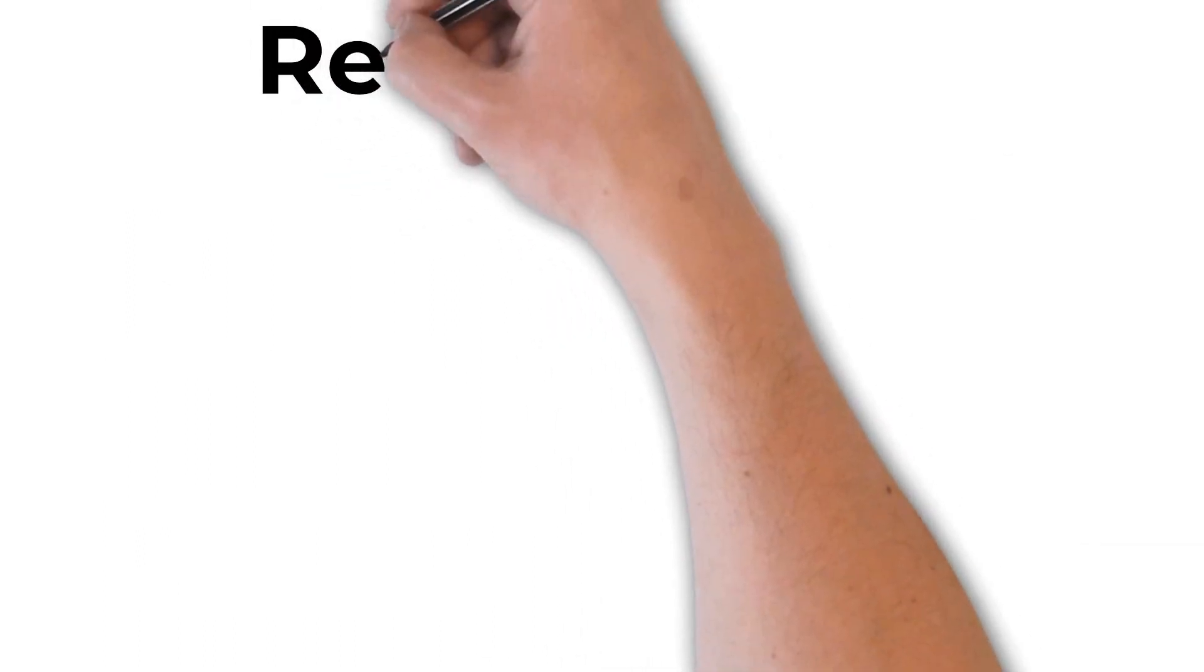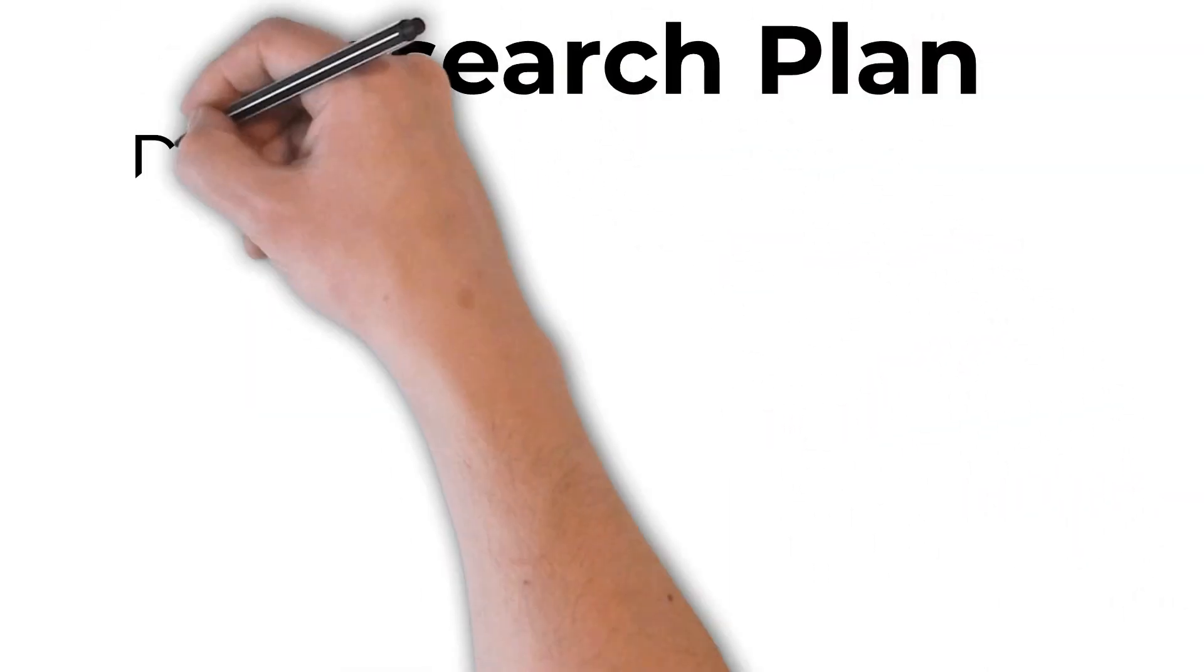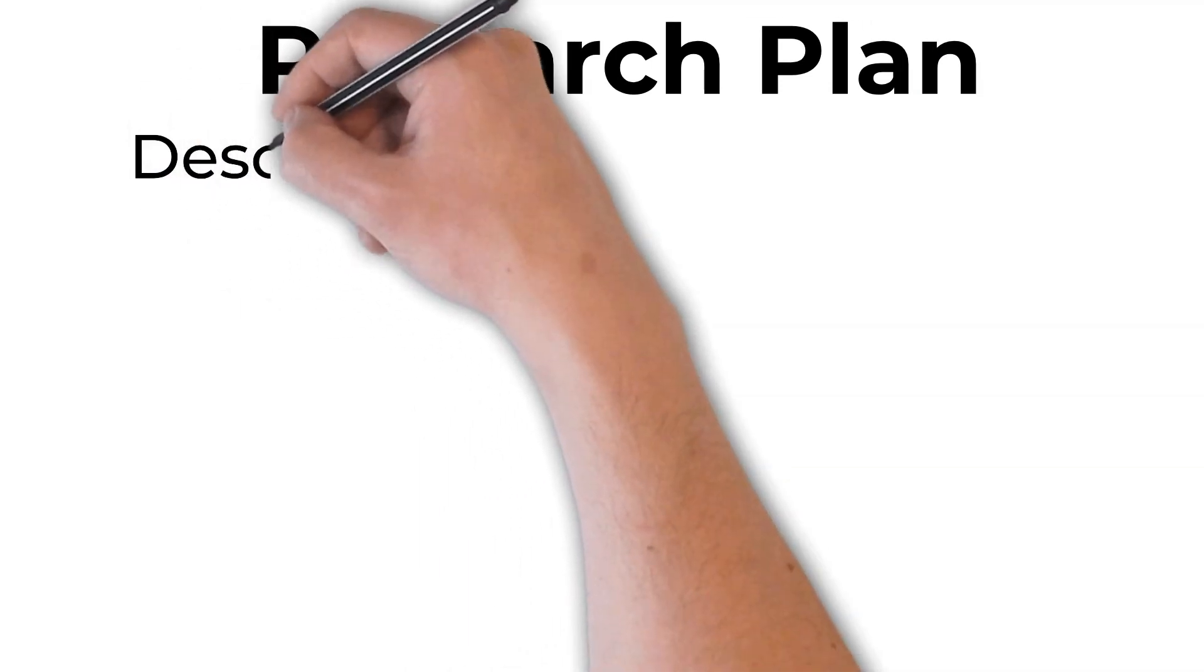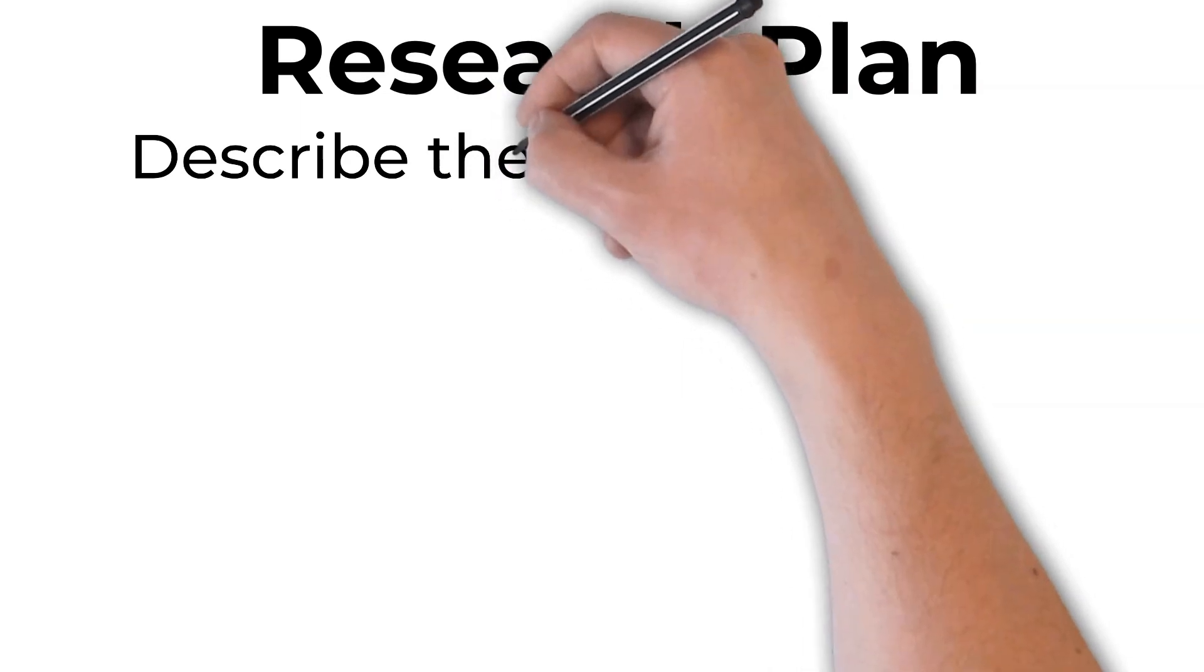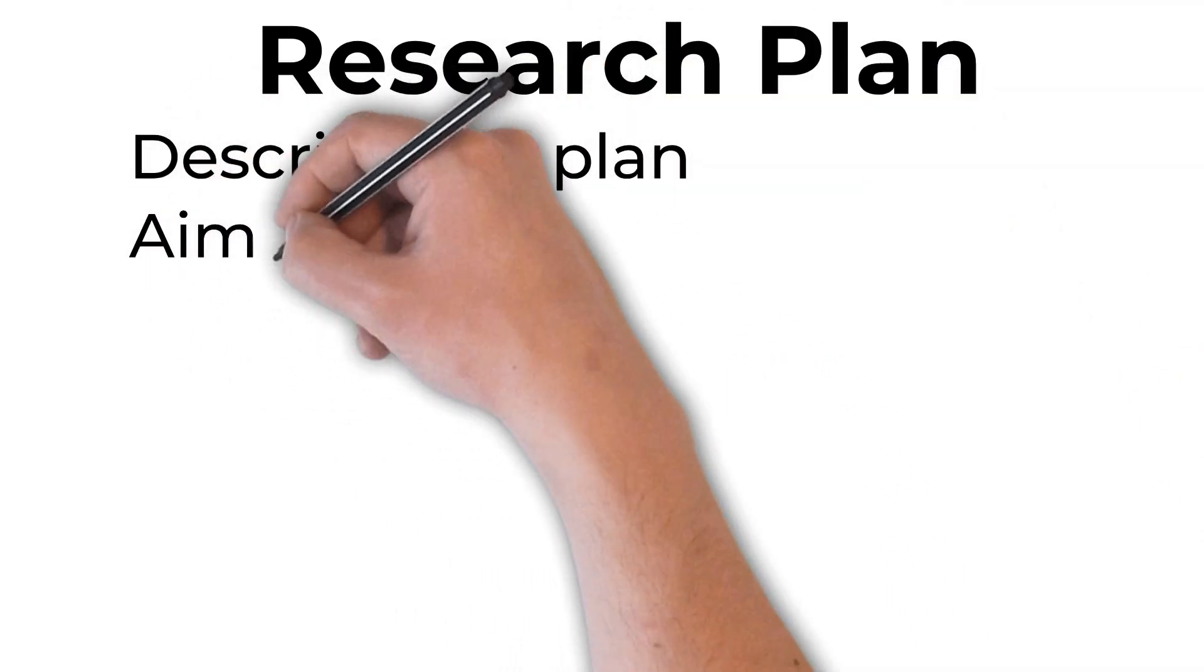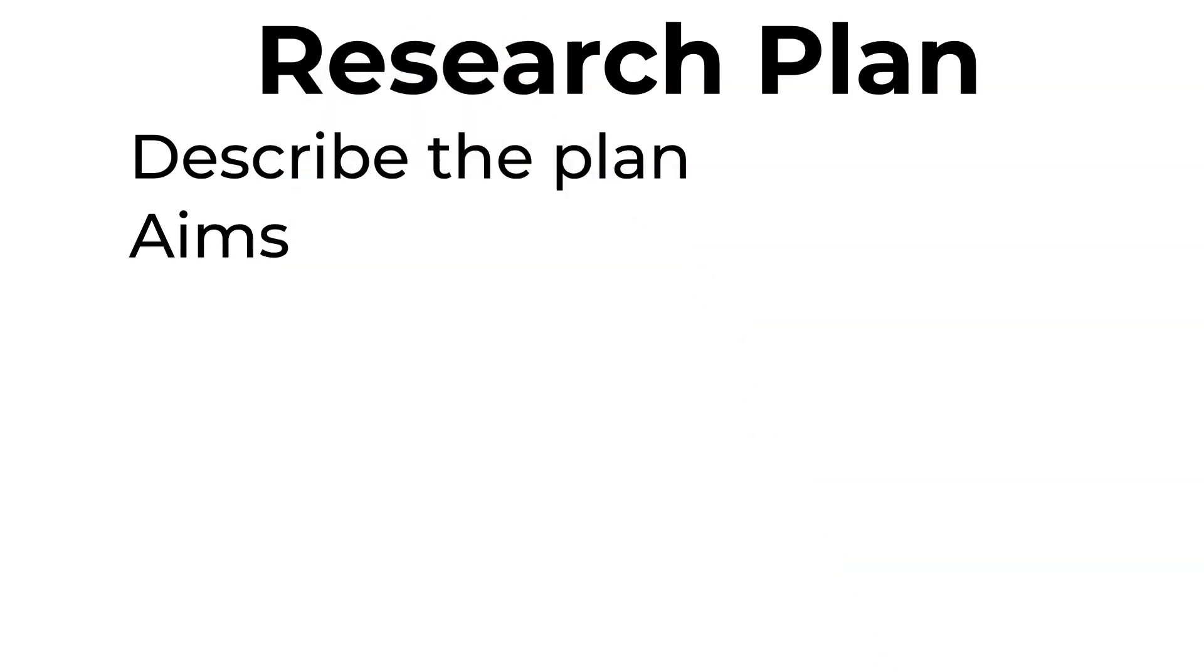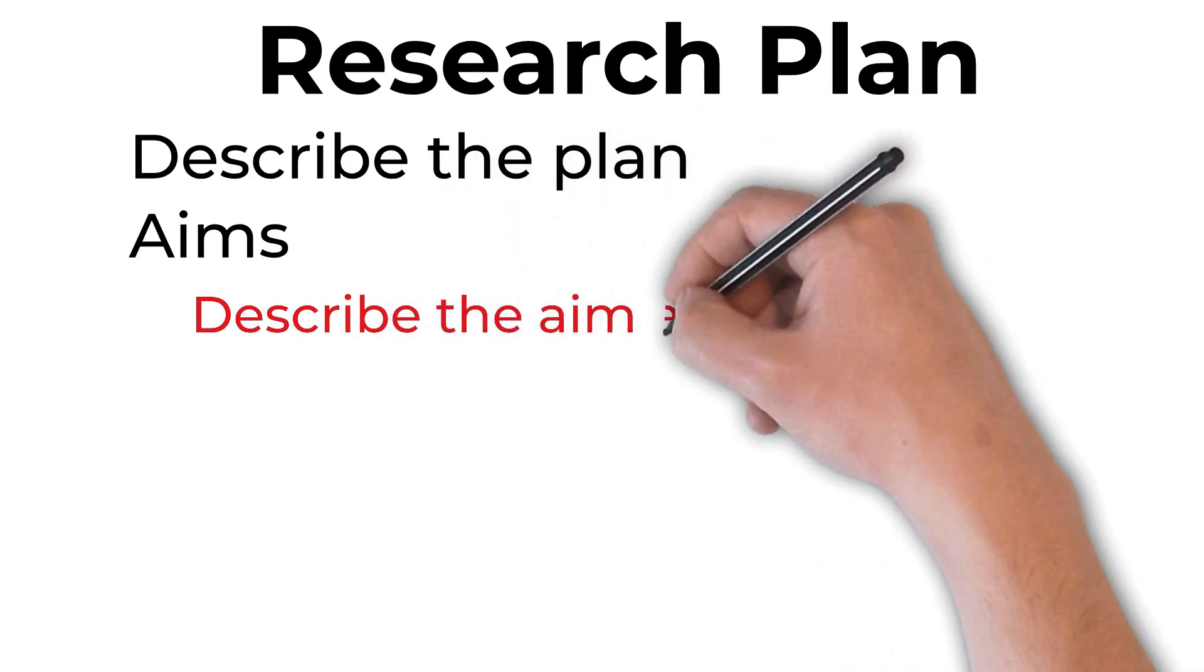Once you've covered your introduction, you want to start writing about your research plan. The first thing I write about in my research plans is the overall plan, the different aims I'm going to be doing, and the overall trajectory. Then I have subsections for each of my aims. Within those, I describe what the aim and the experiments that I'm going to do are.